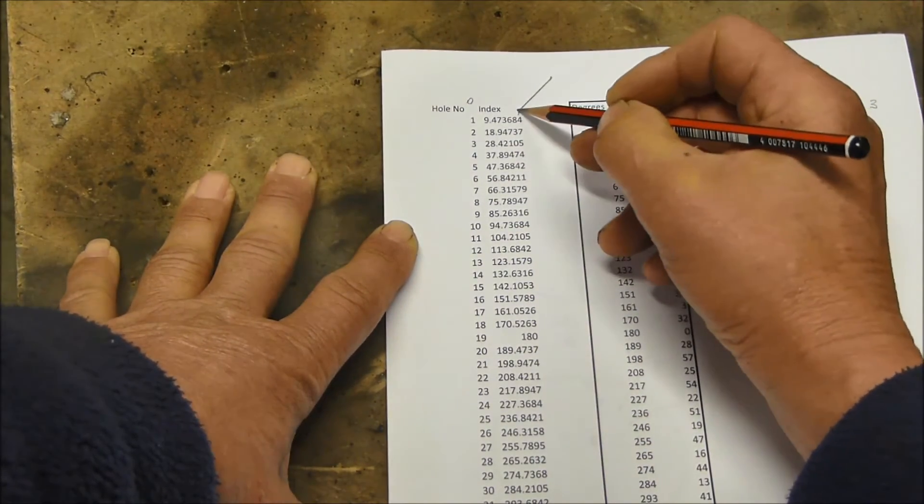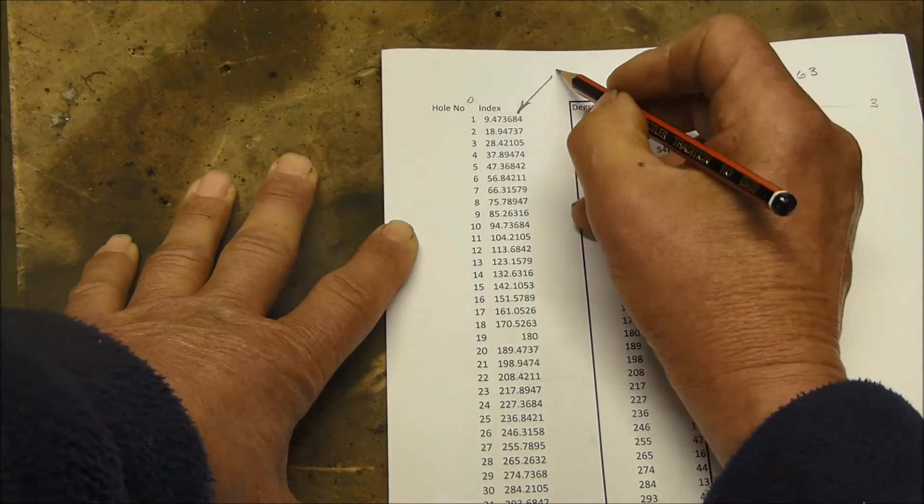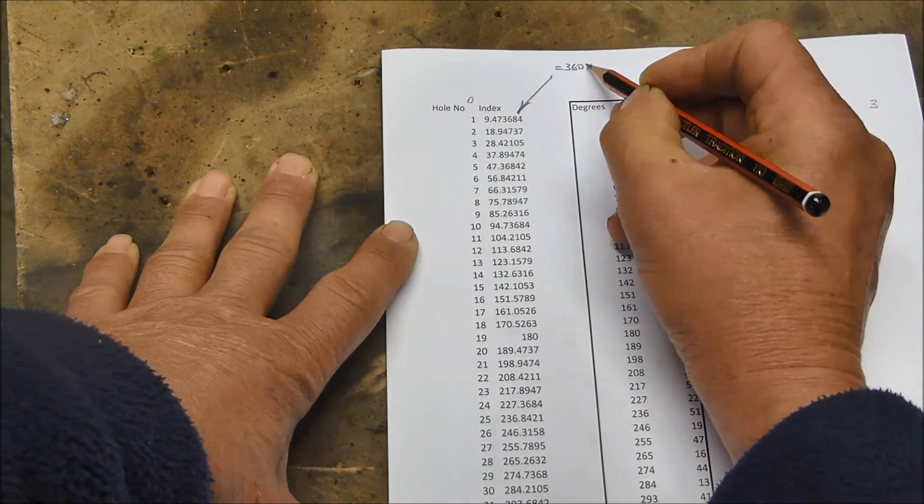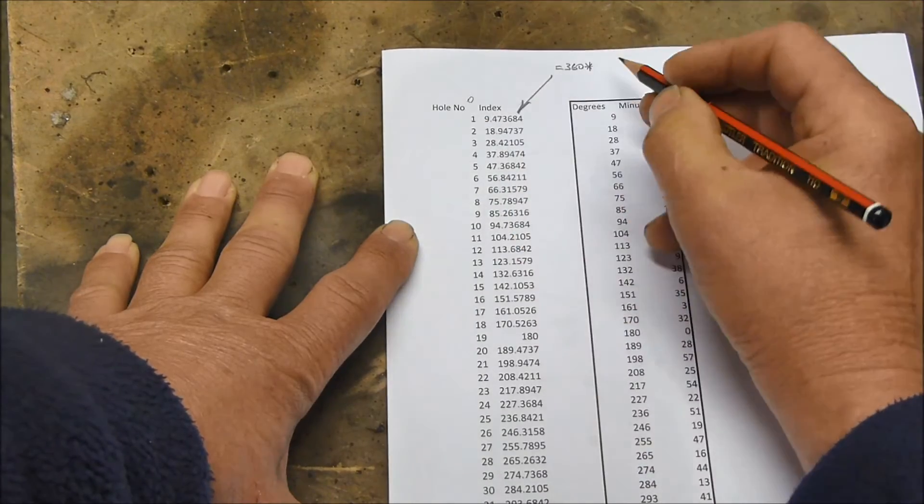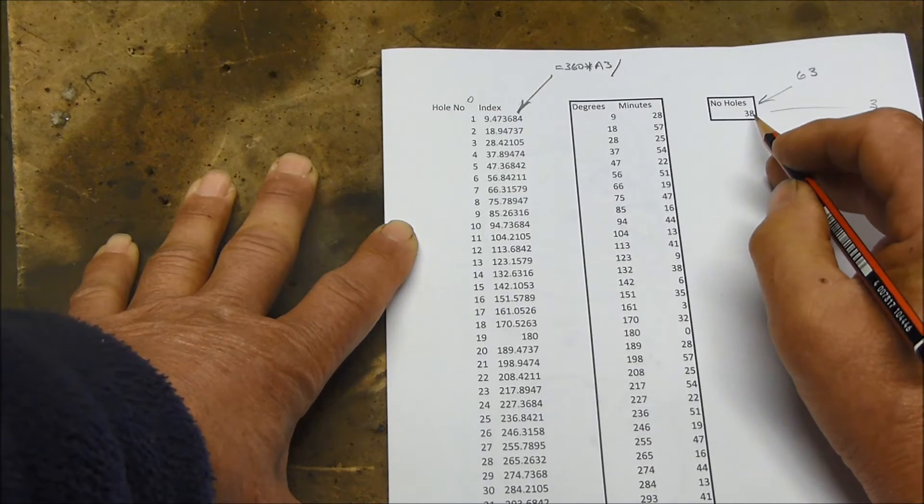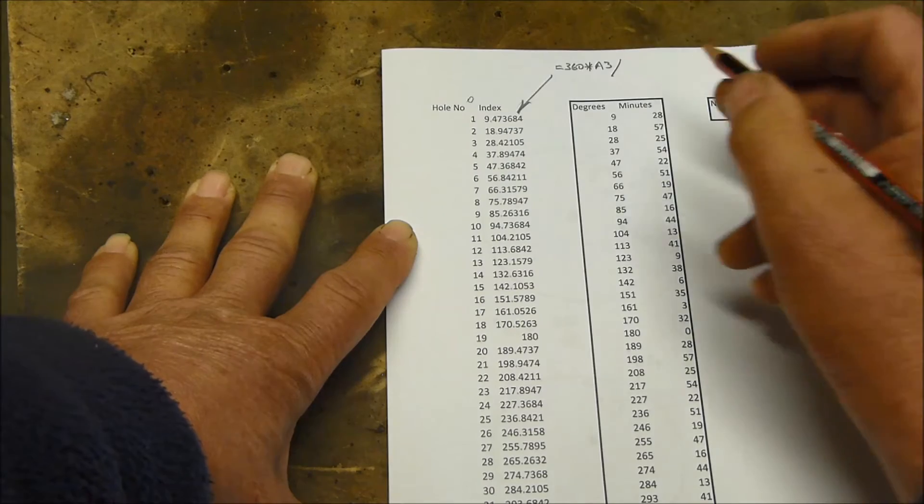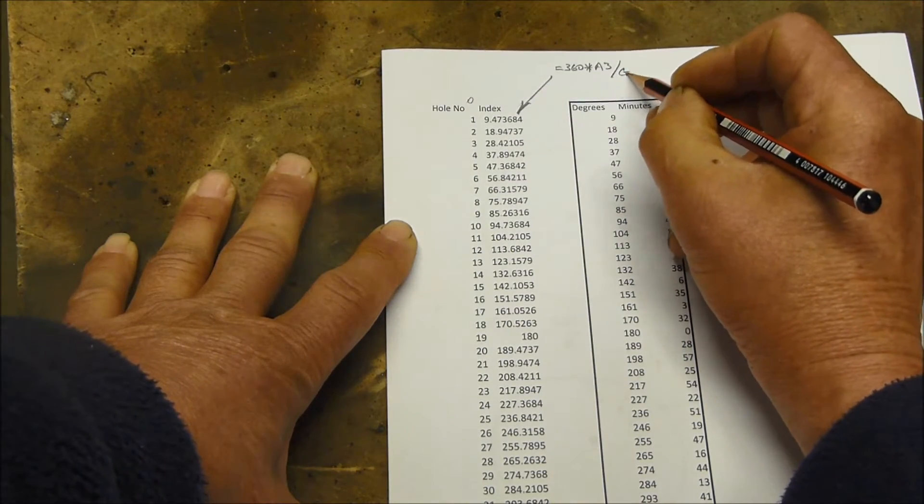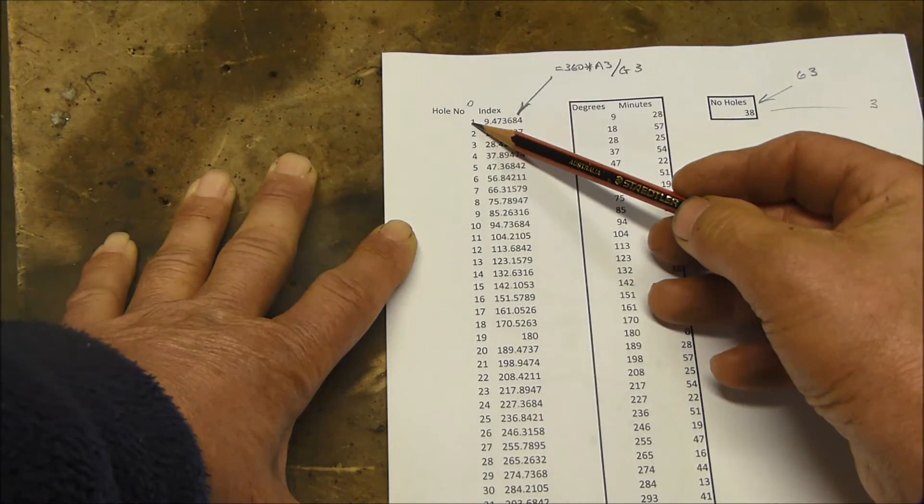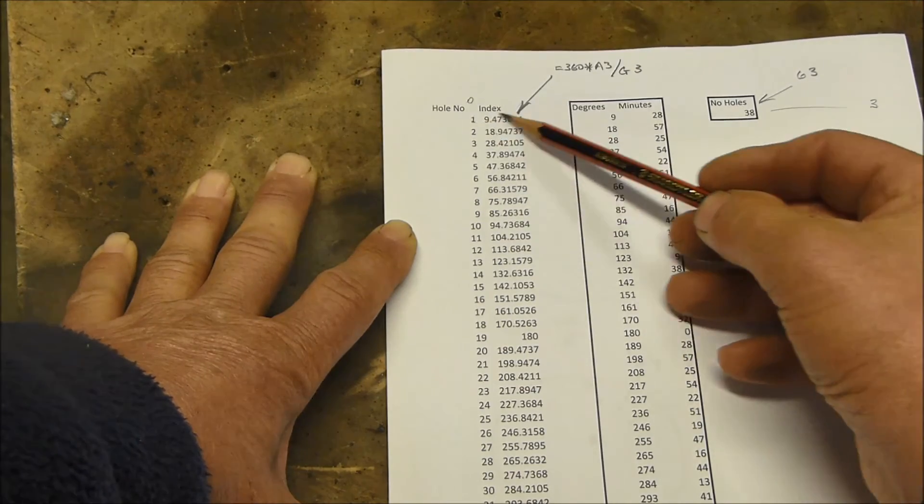In this cell here, which is cell B3, I've got a formula which is equal 360 times that number there, which is A3, divided by the number of holes we want to drill, 38. And the number of holes we want to drill is in cell G3. So we put G3 here. So 360 times 1, which is 360, divided by 38, comes to 9.4 and that's that number there.